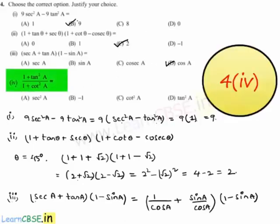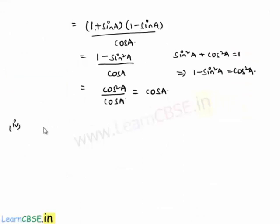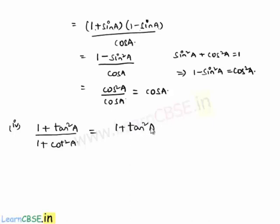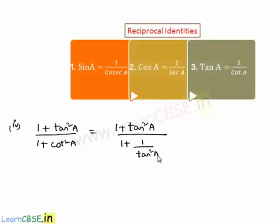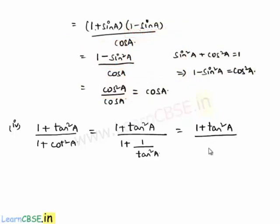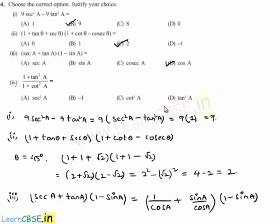Moving on to the fourth bit: the given expression is (1 + tan²a)/(1 + cot²a). We can write 1 + cot²a as 1 + 1/tan²a, taking tan²a as LCM in the denominator, giving (tan²a + 1)/tan²a. So the expression becomes (1 + tan²a) ÷ (1 + tan²a)/tan²a. Since (1 + tan²a) cancels, we are left with tan²a. So option B is correct again.